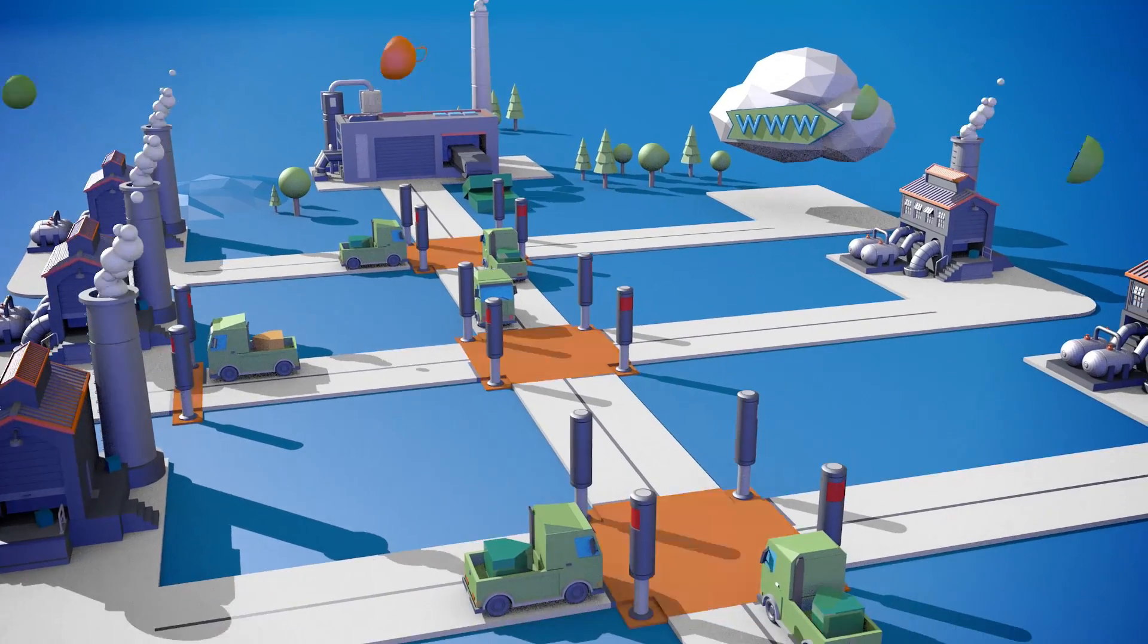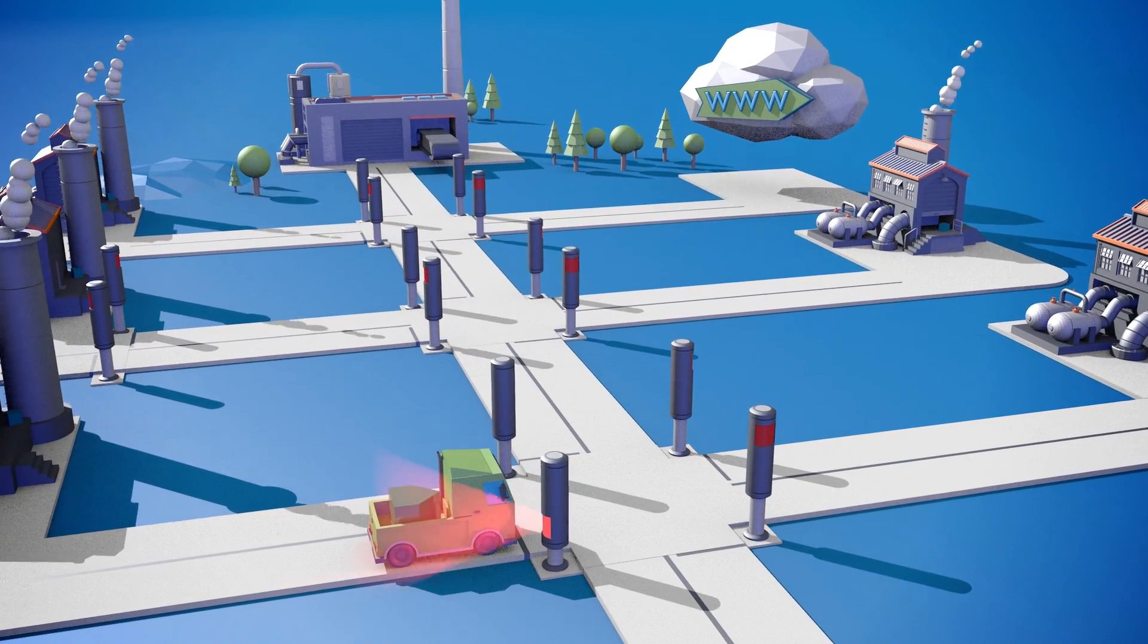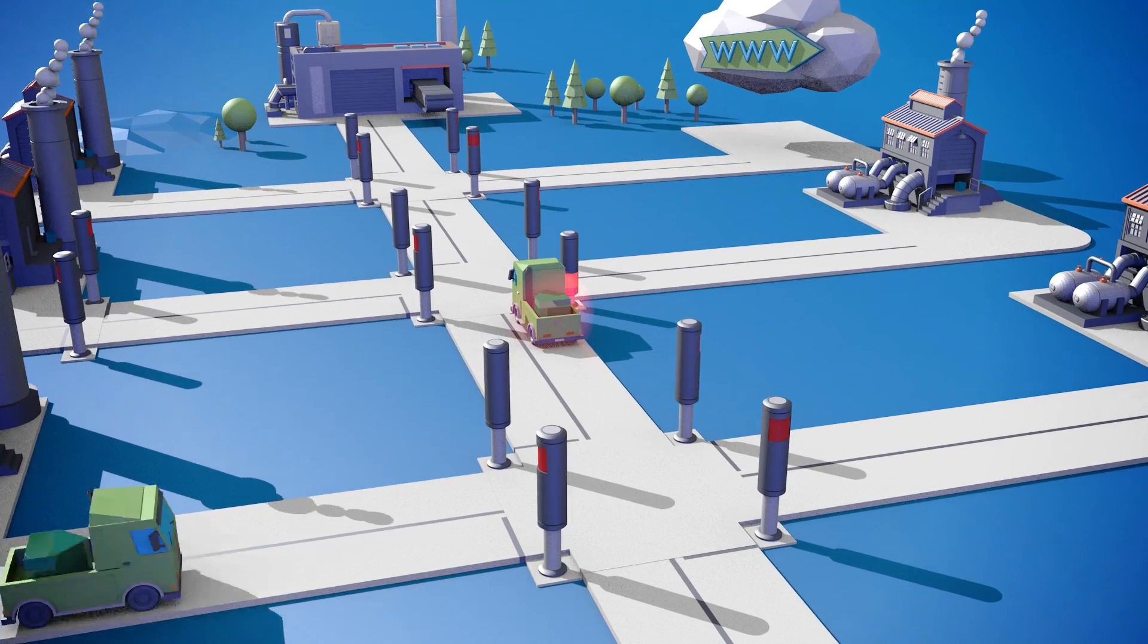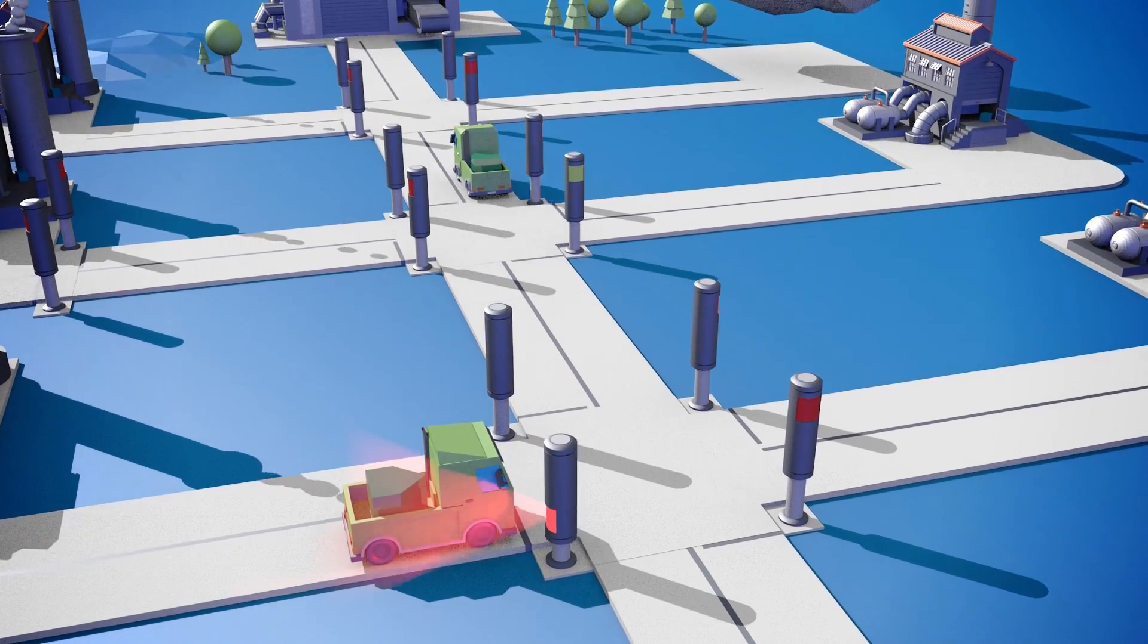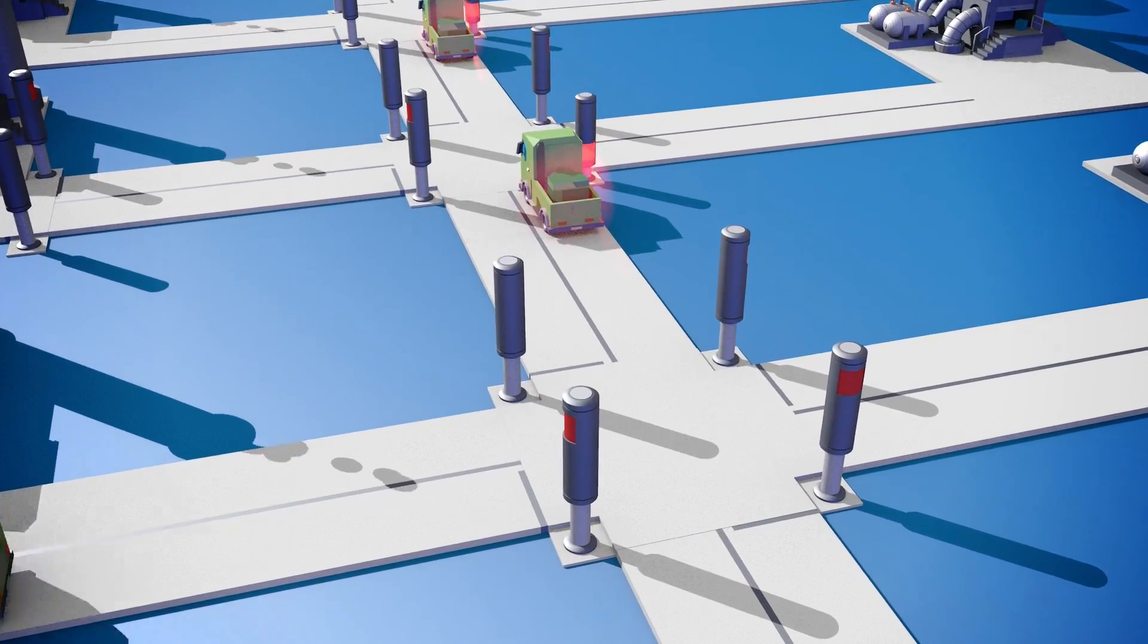Switches transfer the telegrams intelligently but, like traffic lights on our roads, are also an obstacle for the telegrams. How do these intelligent traffic lights work?